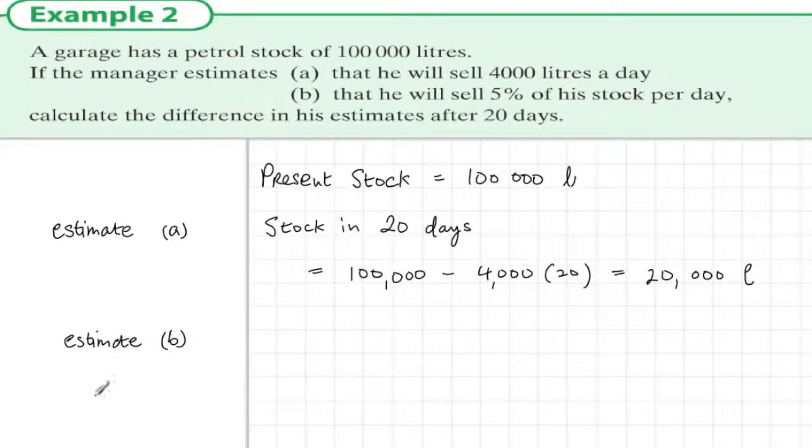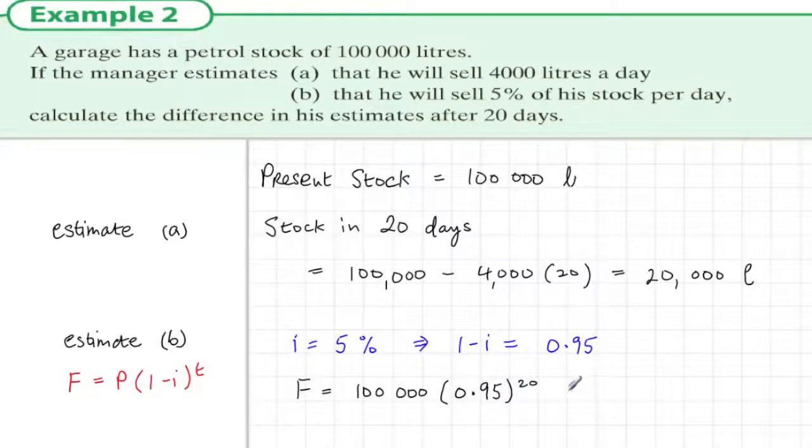Estimate B is using reducing balance depreciation. This uses the formula that the future value is equal to P times (1 minus i) to the power t. Well, i is 5%, so 1 minus i is 0.95, we get 95%. So the future value is 100,000 by 0.95 to the power of 20, and this is 35,849 litres.